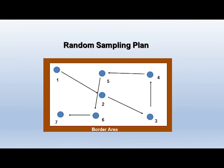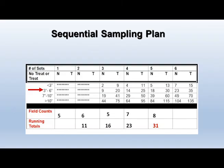There are different thresholds for different heights of plants — smaller plants are at higher risk, and new seedings are the most vulnerable. Measure plant height in several locations and determine the category: less than 3 inches, 3 to 6 inches, 7 to 10 inches, or above 10 inches. Take your first sample and count the number of potato leafhoppers in the net. You need at least two samples to make any decision. On the sequential sampling chart, N stands for no treatment needed and T stands for treatment needed.